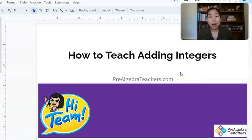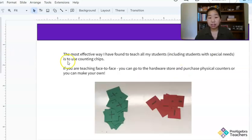Okay, so how do I go about teaching adding integers? The biggest tip that I can give you, because it's really the most effective way that I have found to start with teaching my students, is to use counting chips. Now, if you are teaching face-to-face, you can go to the hardware store and purchase physical counters, or you can simply make your own like I have done here. All I did was I took green construction paper and labeled them with plus signs, and I took red construction paper and labeled them with subtraction signs. I just cut out a bunch. I actually had a student do this and gave them a job so that they had something to do and I could save some time.